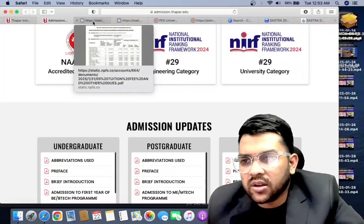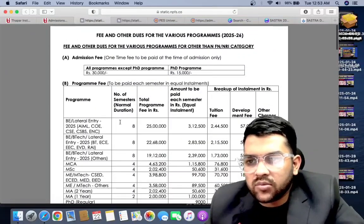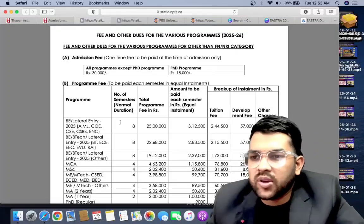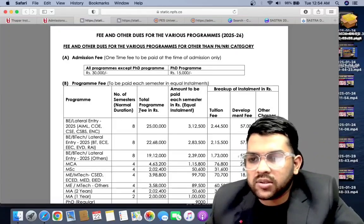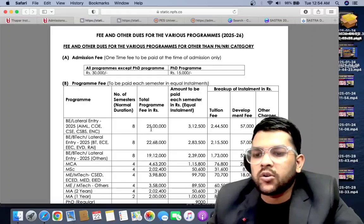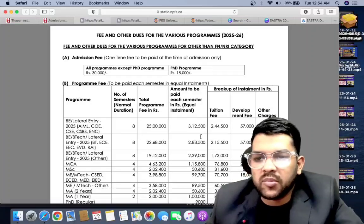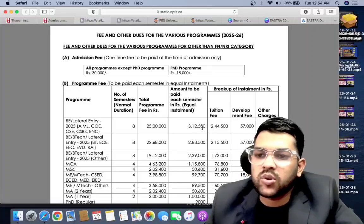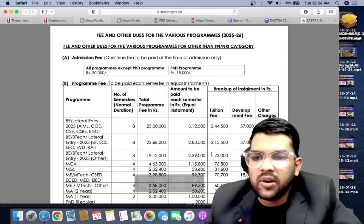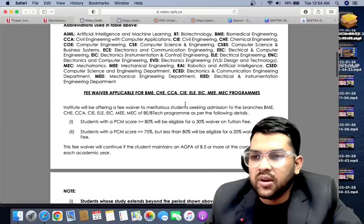First, the fee structure of the college. As you can check here, the admission fee is 30,000 and total for four years semester program is 25 lakh. Semester-wise you have to pay around 3 lakh 12,000.